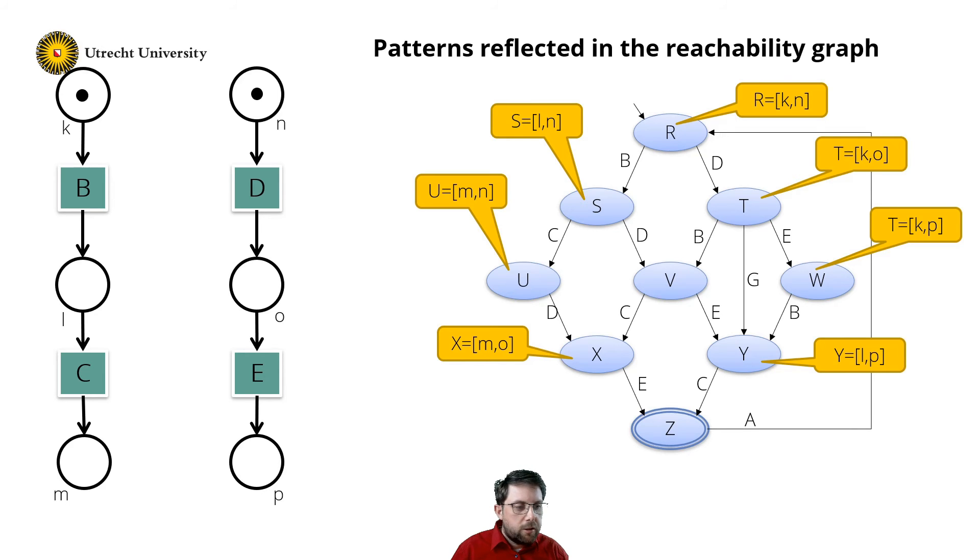There are still two missing transitions. Here transition G and transition A. Let's focus on transition G first. So observe, it moves from state T to state Y.